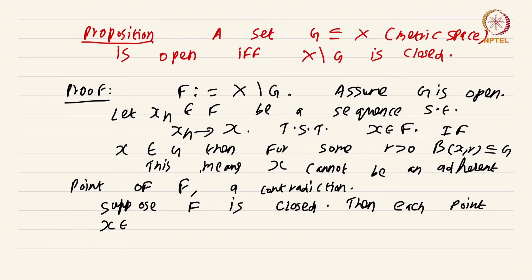Rather I will write it in a slightly better way grammatically. Then any point x in G cannot be an adherent point of F, right? Because F and G are complements of each other.